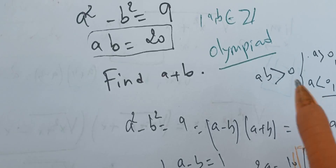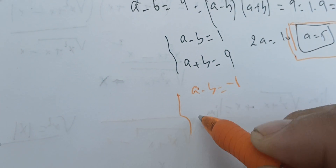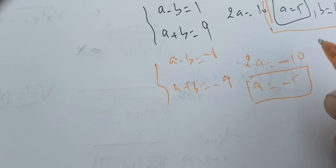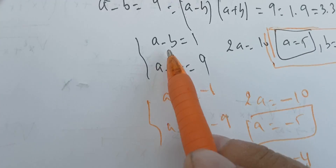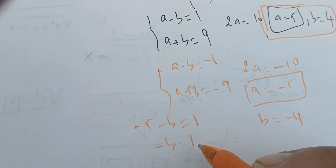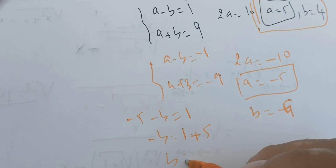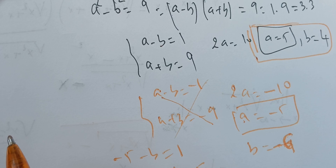Next case: if a minus b equals minus 1 and a plus b equals negative 9, adding gives 2a equals minus 10, so a equals minus 5. Then b equals minus 6. Checking: a times b equals (−5)(−6) equals 30, which is not 20. So this is not a solution.